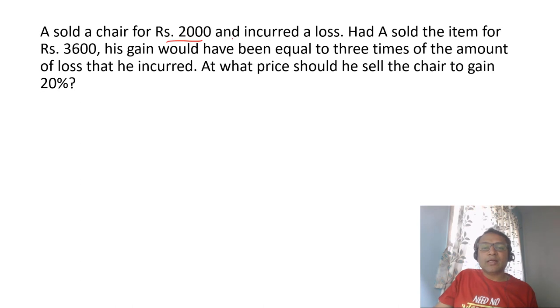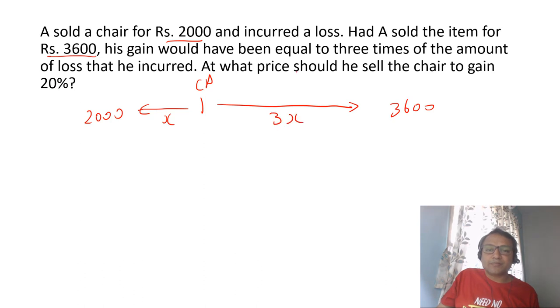He sold a chair for Rs. 2000 and incurred a loss. Had A sold the item for Rs. 3600, his gain would have been equal to three times the amount of loss. So let's say 2000 and 3600. I'm just putting it in a diagram format and let his cost price be here. So this is loss, this is gain. His loss is X and profit is 3X because profit is equal to three times the amount of loss. If you look at the difference here, it is 1600. Which means if I divide in the ratio of 1:3, it becomes 400 and 1200. So from that, I can make out the cost price is 2400.